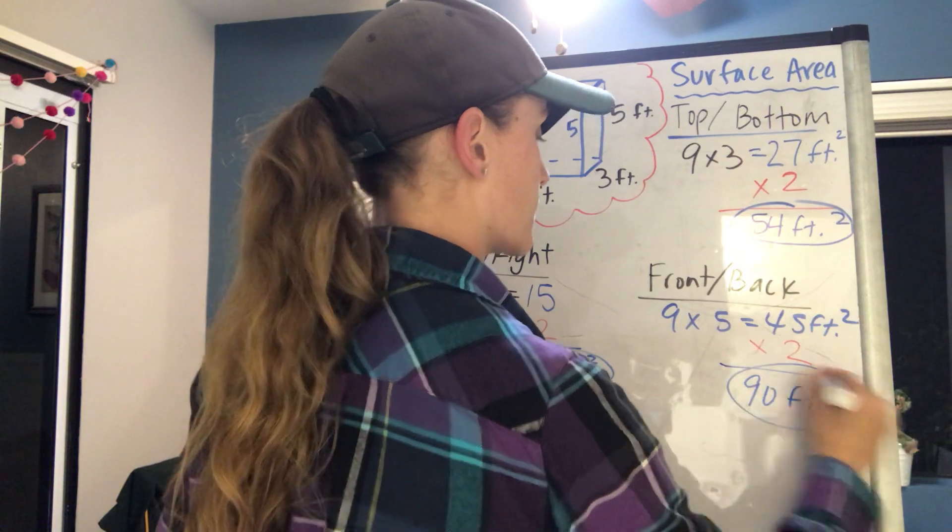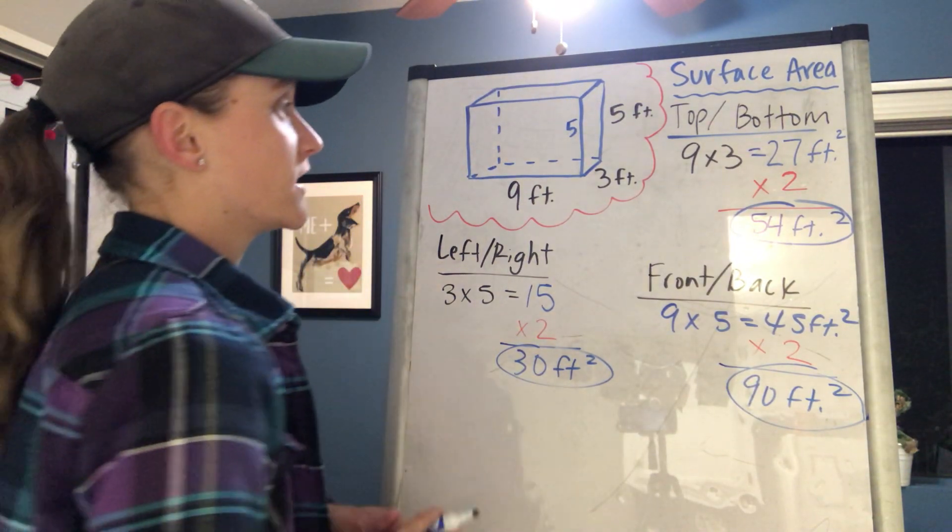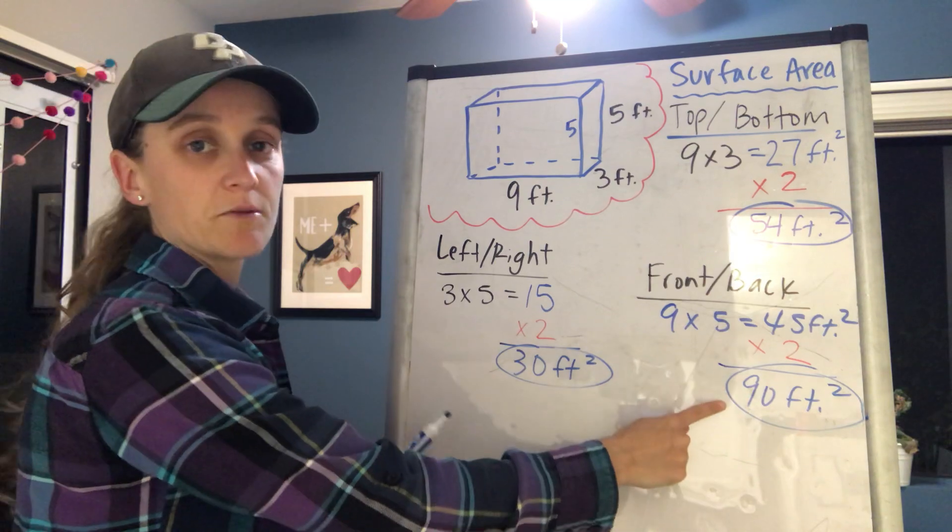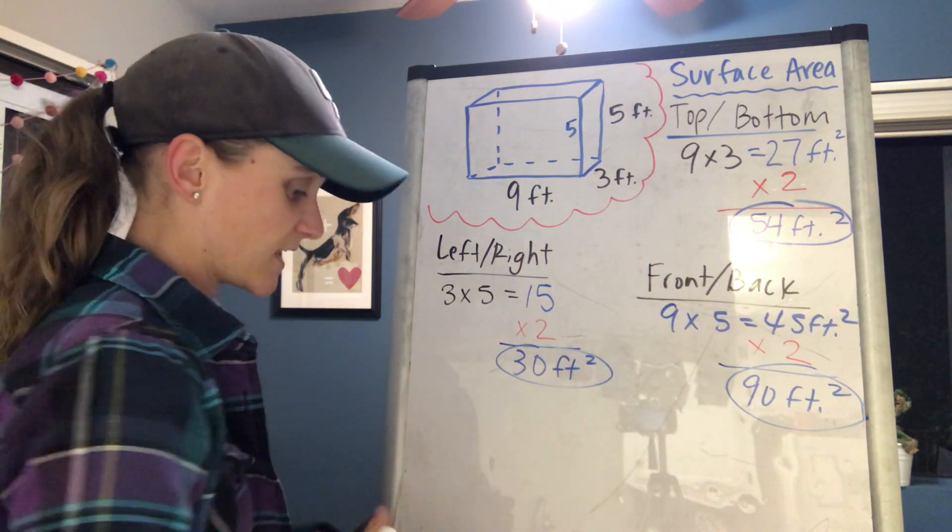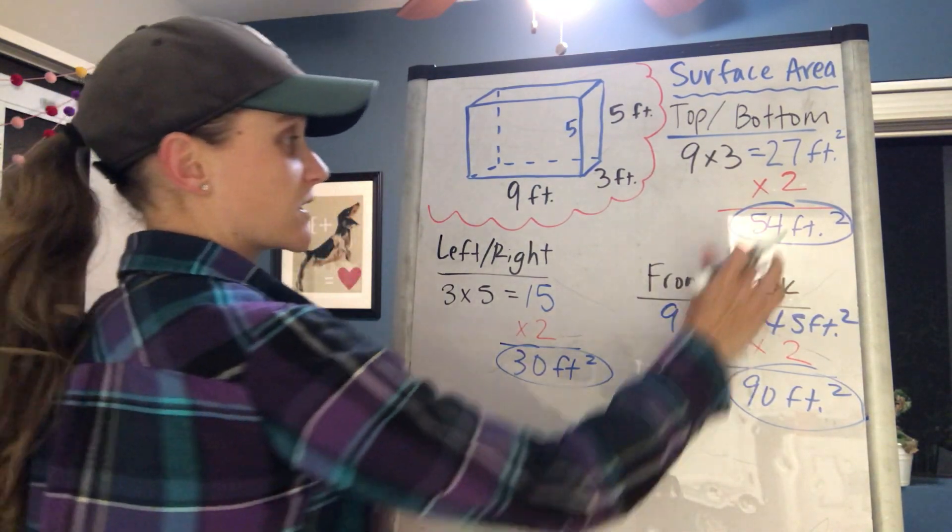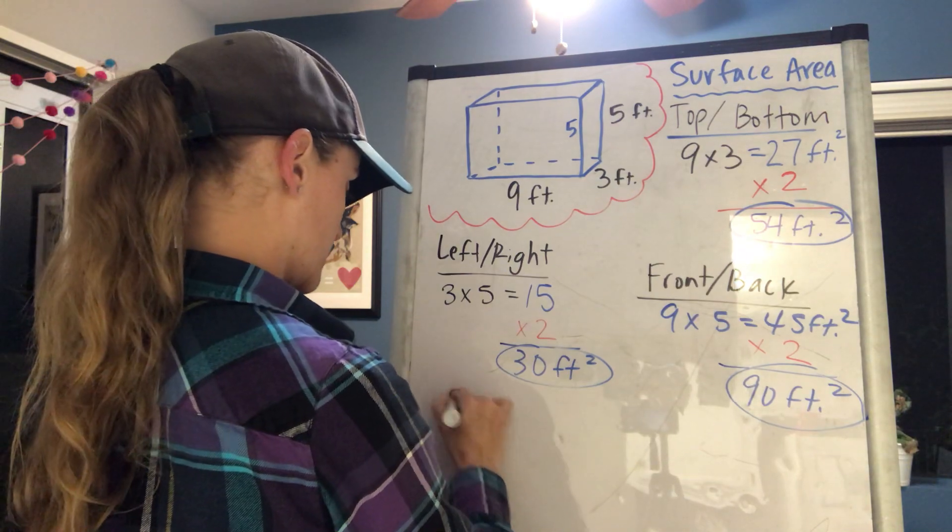Okay, so now I found the area of the top and bottom, left and right, front and back. So now what I need to do is add all these numbers together. I'm gonna add, so let's say SA for surface area.